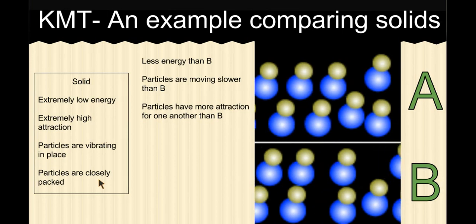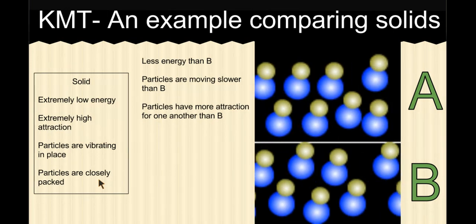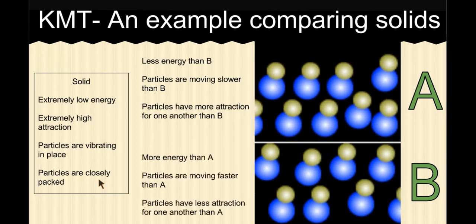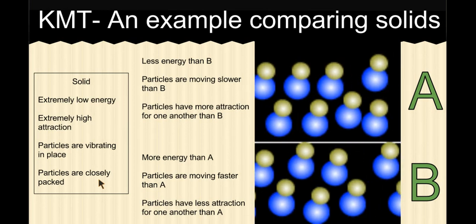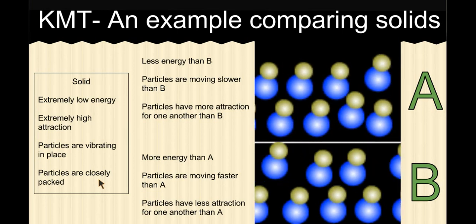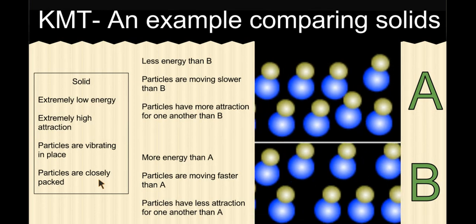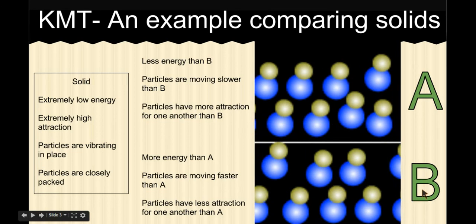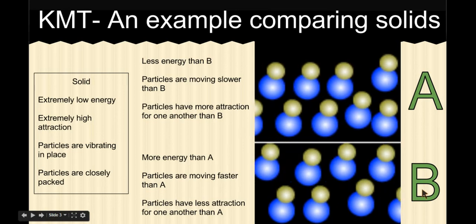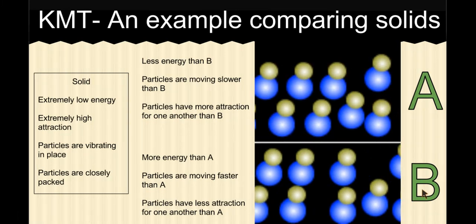How would I talk about B? Well, solid B. The particles have more energy than that of A. The particles are clearly moving faster, and they have less attraction for one another than A. Do they still have lots of attraction in B? Do these particles in B still have lots of attraction? Yes, but slightly less than the particles of A.